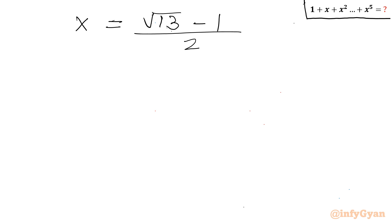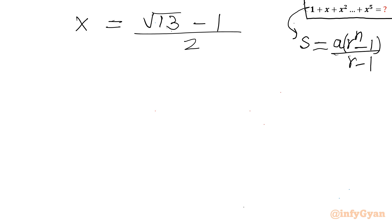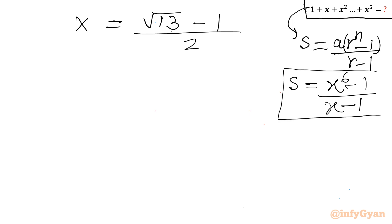Now we have to calculate this expression. Since it is a GP, I can write the sum for 6 terms as a times (r to the power n minus 1) over (r minus 1). So I can write S equal to first term 1, common ratio x, so x to the power 6 minus 1 over (x minus 1). We have to find x to the power 6. x we have already calculated, so let me calculate x to the power 6. I will write x to the power 6 as (x cubed) whole squared.